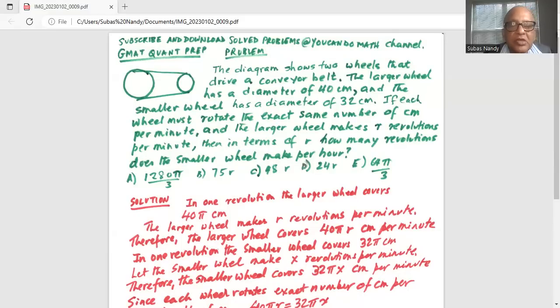In one revolution, the smaller wheel covers pi times diameter, which is 32 pi cm. Let the smaller wheel make x revolutions per minute. Therefore, the smaller wheel covers 32 pi times x cm.